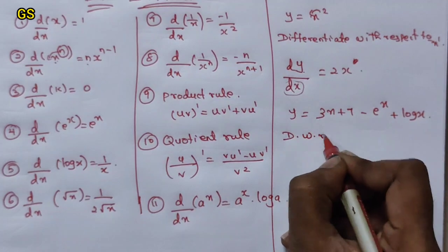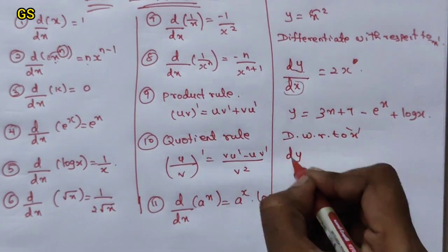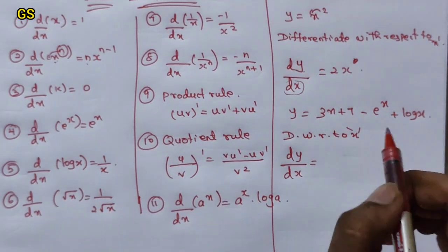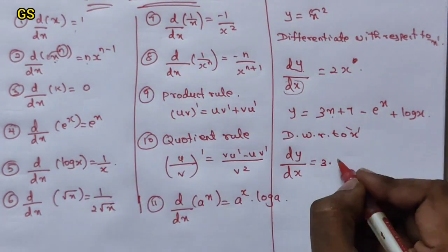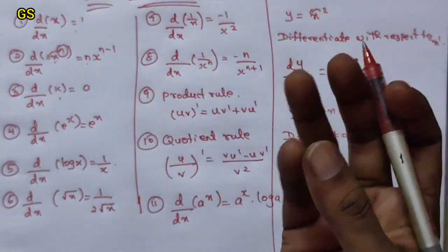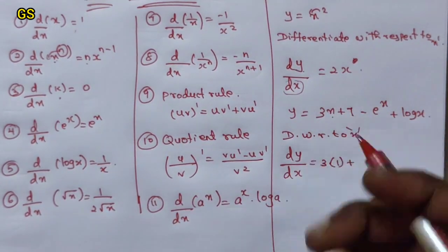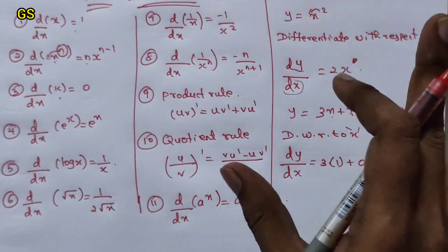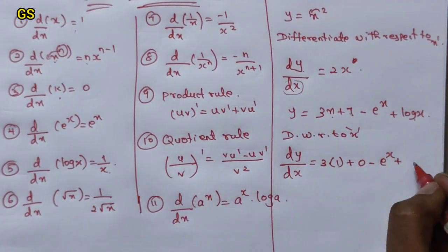dy/dx — differentiating with respect to x: a constant differentiates to 0. x differentiates to 1. So 3 is a constant, e power x differentiates to e power x, and log x differentiates to 1 by x.